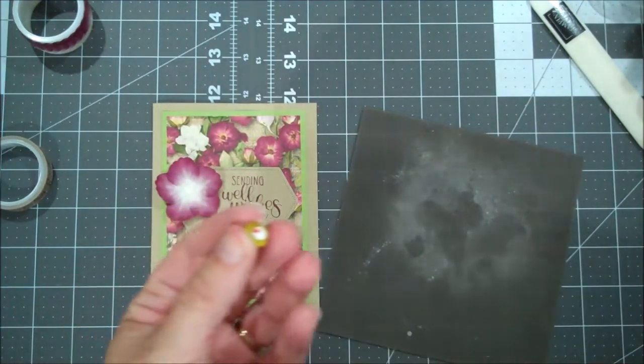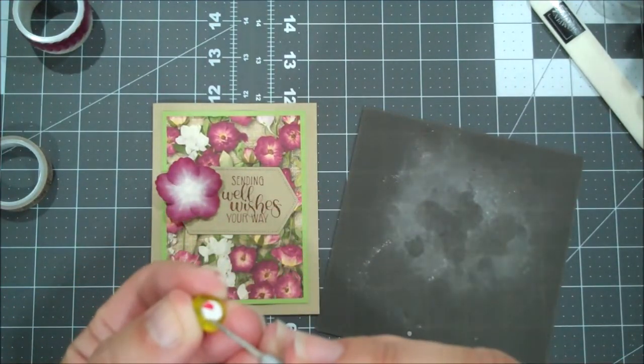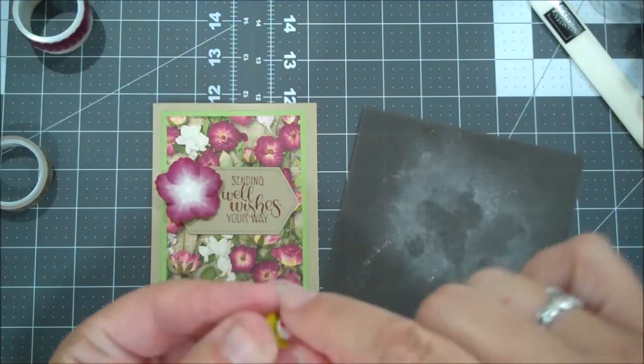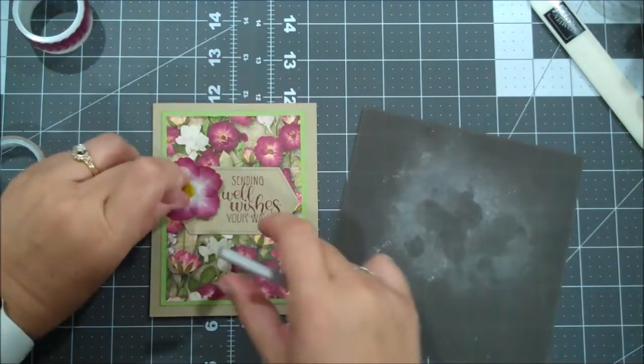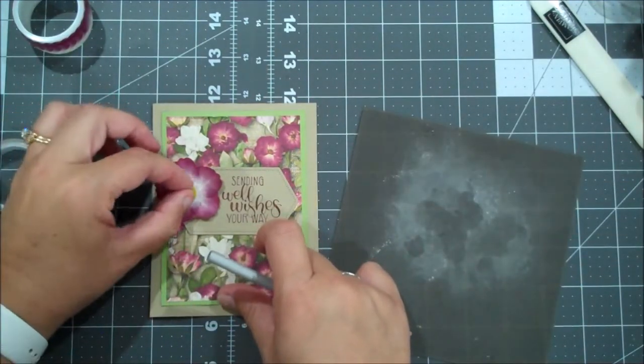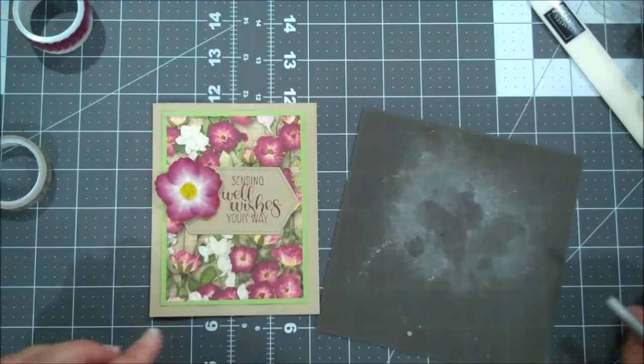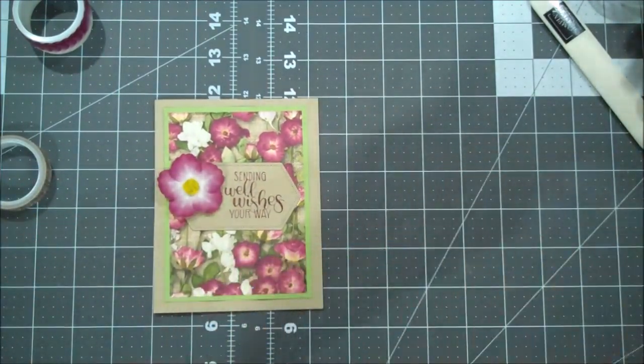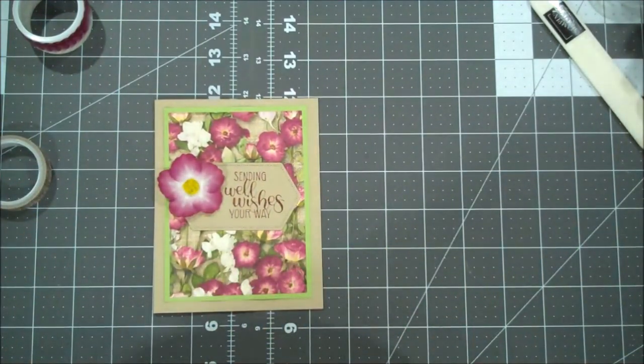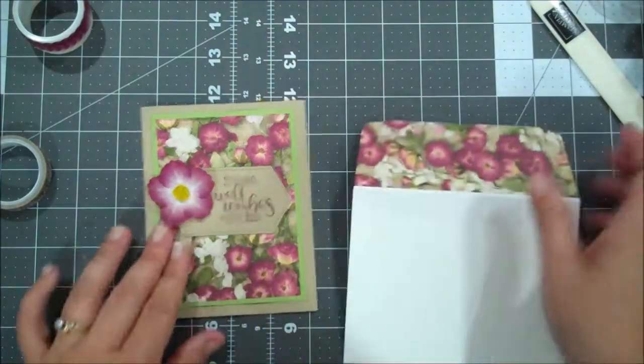Okay, and then let's grab our little perennial essence center. Let me get my little piercer to get the label off. There we go, and then we're just going to drop that right into the center. Oh, I just love it, I think it is so cute.